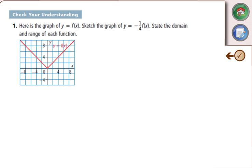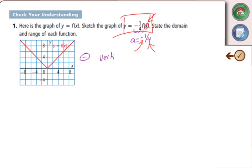Let's look at example one: the graph of f(x) is shown and we're going to do negative one-quarter f(x). Our a-value is negative one-quarter, but that's actually two different transformations. The negative is one transformation and the one-quarter is a second transformation — you cannot combine them in your wording. Both are outside the brackets with the x. The negative tells us we have a vertical reflection about the x-axis.